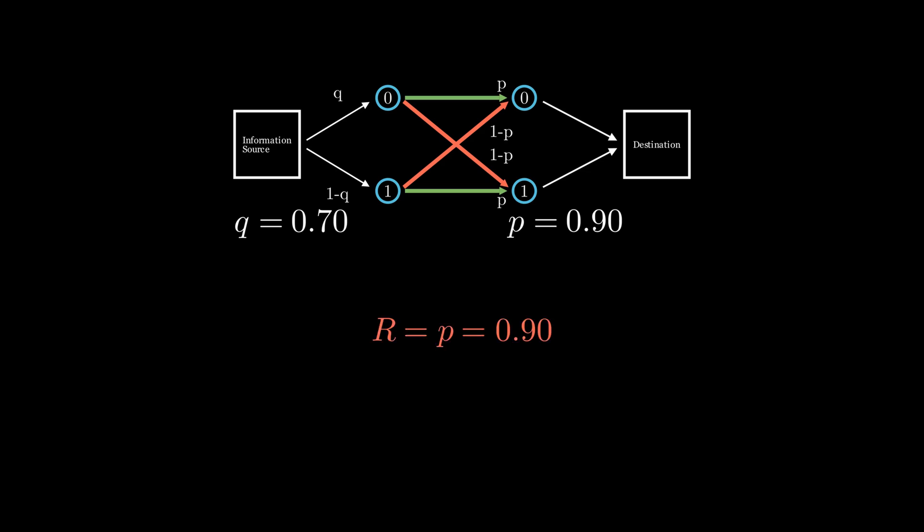Let's see what happens as we increase the probability of a bit flip to 0.5. By our current definition, we are still sending bits with a rate of 0.5, but there is actually no information being transmitted, since what the destination gets is just random outcomes.